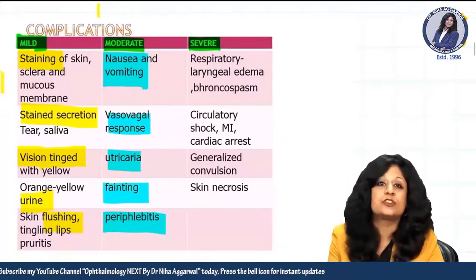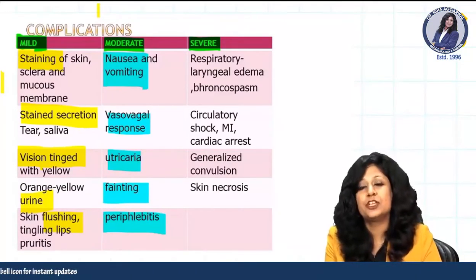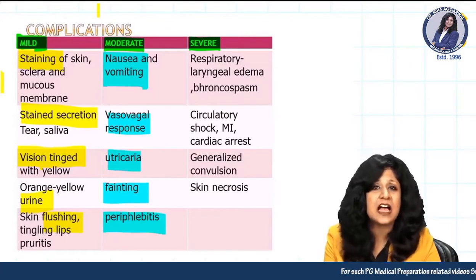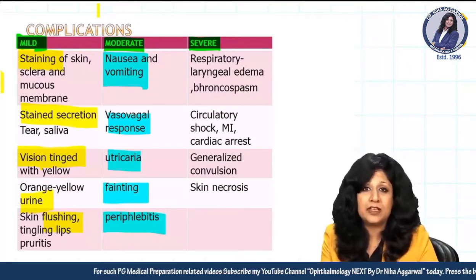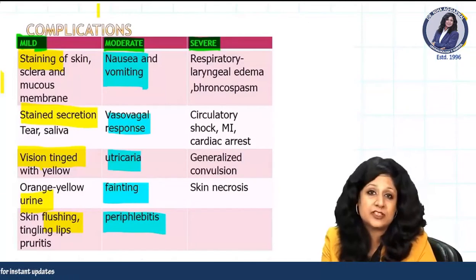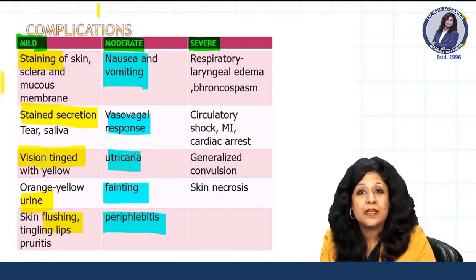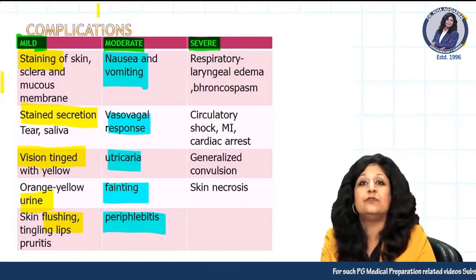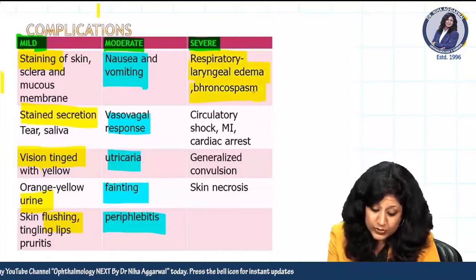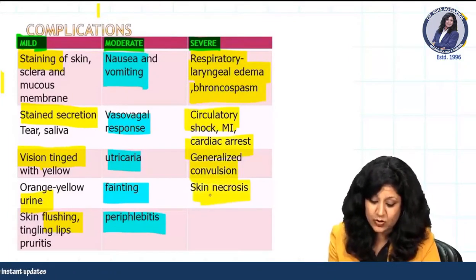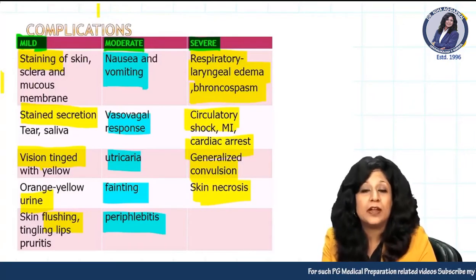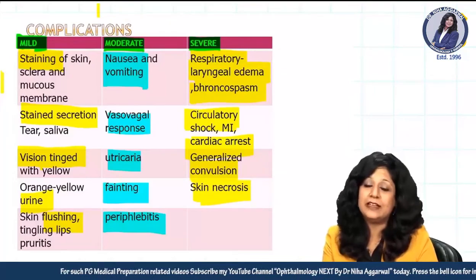Severe complications are the most important. You should not do these angiographic procedures at night when you are not well equipped with OTs, anesthesia, technicians, and staff to deal with emergencies. Always perform these procedures during the day when any emergency can be properly managed. Always be ready with the emergency tray; ABC should be well secured; be ready with emergency drugs and informed consent. Severe complications include laryngeal edema, bronchospasm, circulatory shock, cardiac arrest, convulsions, and skin necrosis. They are quite rare but important.